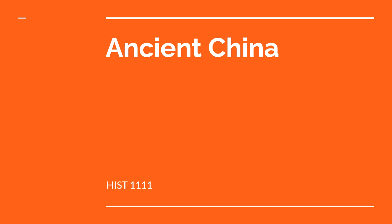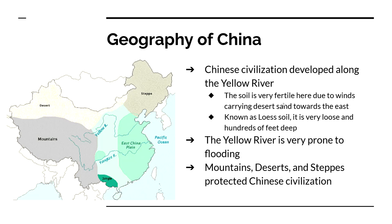This is the second video for number three — we're going to look at ancient China. Geography of China: there are many different biomes. You've got steppes, which are cold grasslands, deserts, mountains, jungle, and plains. All of this comes together to create a unique environment in Eastern China. The Chinese civilization is going to develop along the Yellow River.